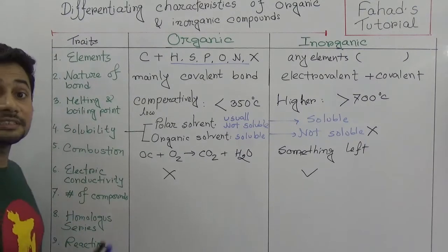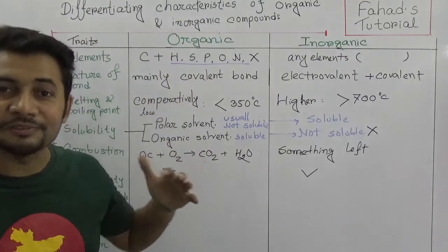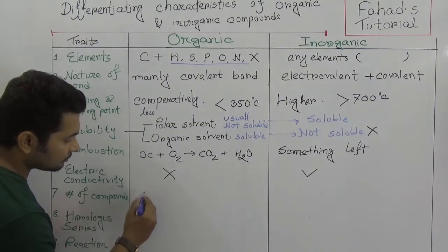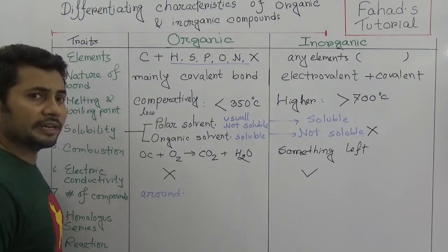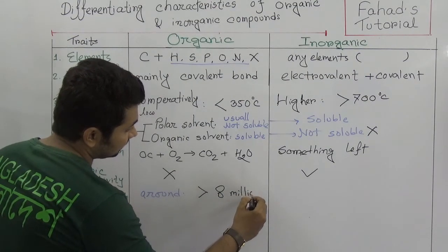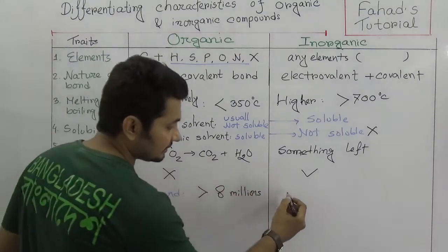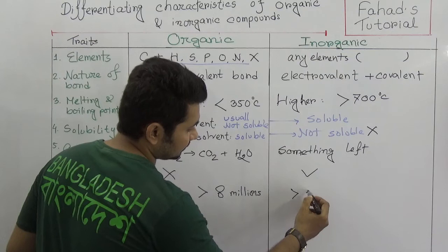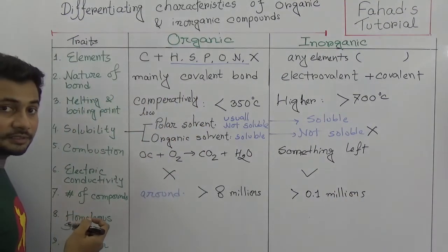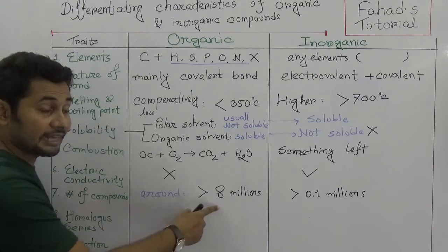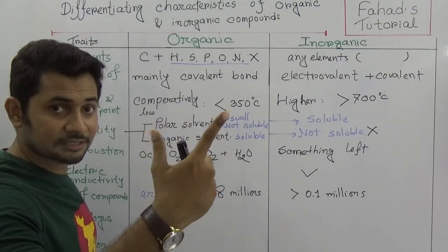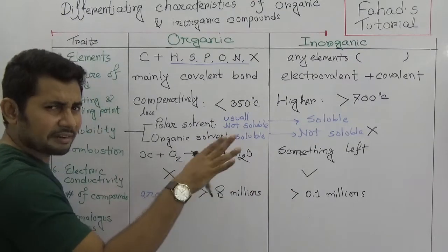Regarding number of compounds — the number of organic compounds is much higher than inorganic compounds. Organic compounds number more than eight million, while inorganic compounds number around 0.1 million. The large number of organic compounds is due to three reasons: catenation, isomerization, and polymerization.